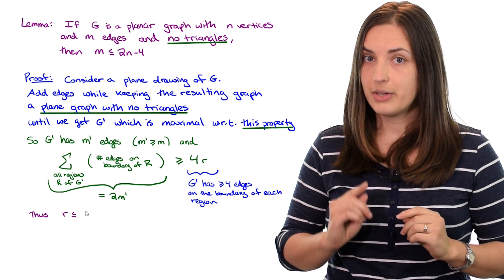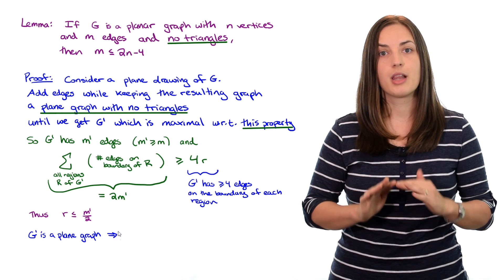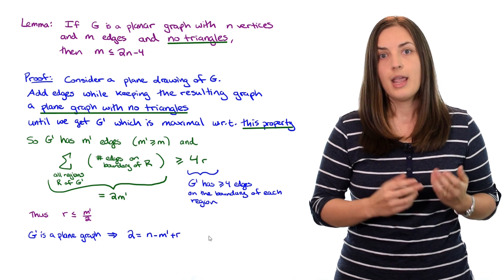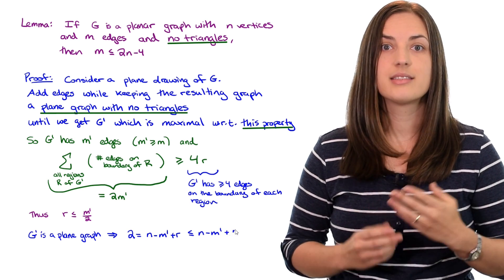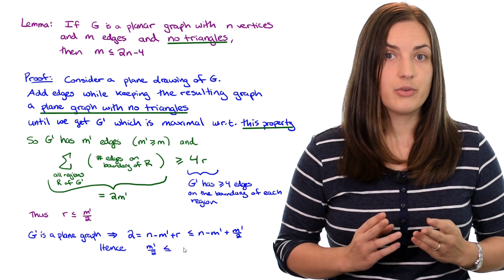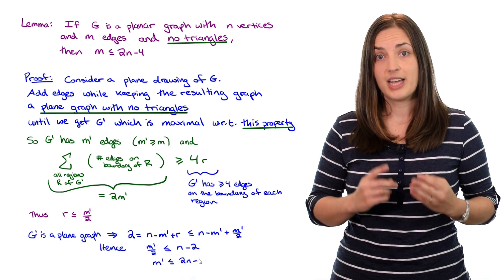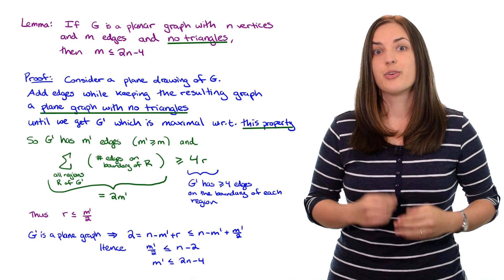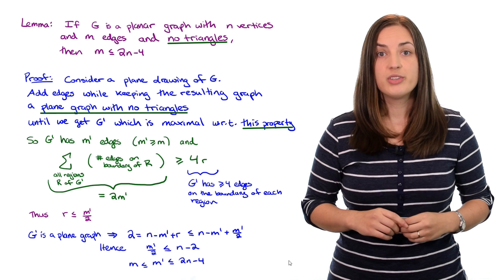Each edge is counted once on each side, so every edge is counted twice, meaning the sum equals two times m prime. This gives a relationship between m prime and r: r is less than or equal to m prime divided by two. Since G prime is a plane graph, Euler's formula holds: 2 equals n minus m prime plus r. Substituting, we get 2 is less than or equal to n minus m prime plus m prime over two. Rearranging gives m prime divided by two is less than or equal to n minus two, so m prime is less than or equal to two times n minus four.